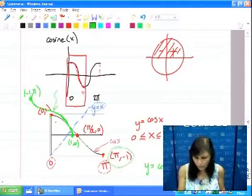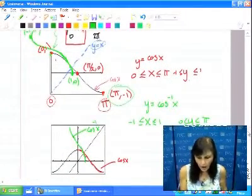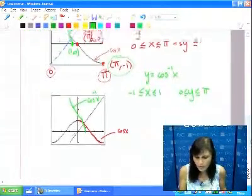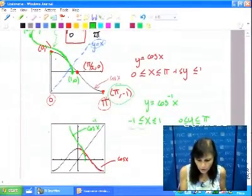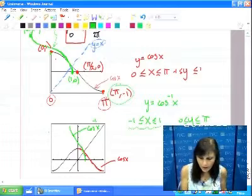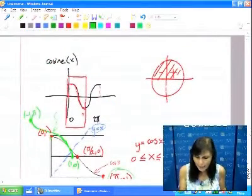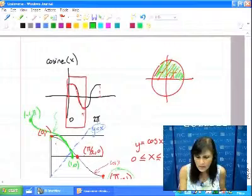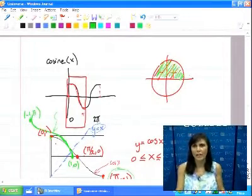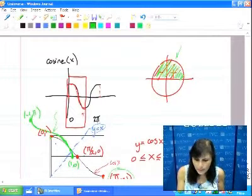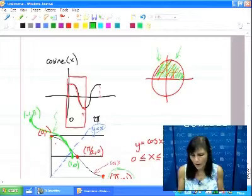It used to be for cosine, it used to go 0 to π, and y was going -1 to 1. For the inverse, my x is going to go from -1 to 1, and the y is going to go from 0 to π. What does that mean? I limited my angles into this top portion of my cosine, quadrant 1 and 2. When I get cosine inverse of something, the angle that I get out of this has to be either quadrant 1 or quadrant 2.